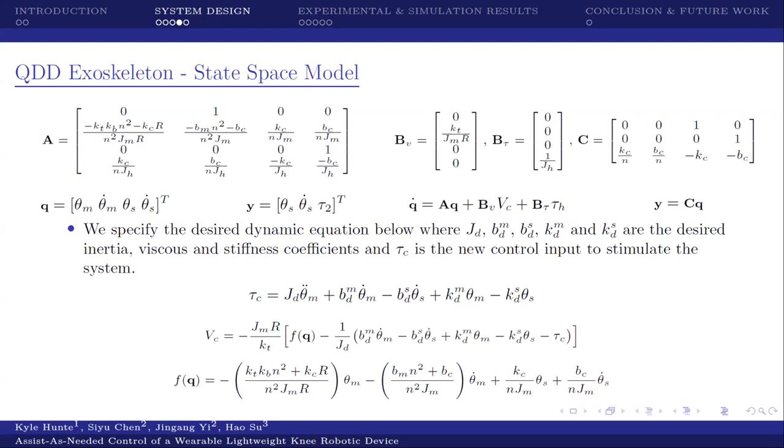This model, the response of this model based off of the state-space model is written here. But what if we would like to change the response of the system? To do that, we develop our desired dynamic equation, which is shown right here. With that dynamic equation, we achieve this dynamic equation by utilizing the input voltage VC and using feedback control to change the dynamics of the system as shown here. This is how eventually you would acquire the desired dynamics of the system that you want.